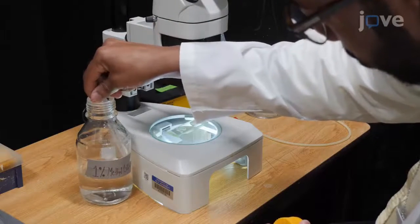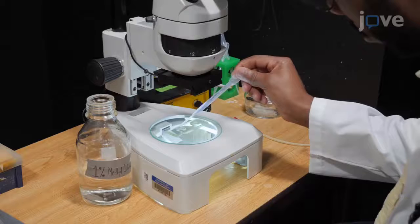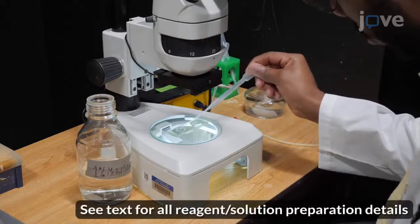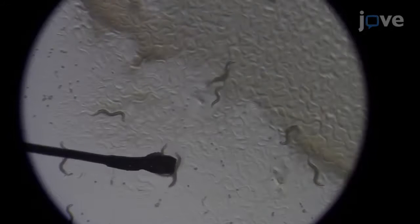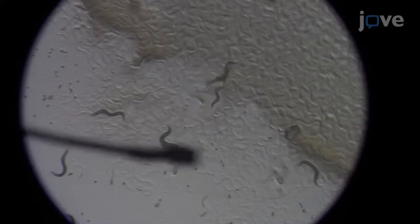Begin by adding 500 microliters of 1% methylcellulose solution into the depression of a concave microscope slide. Using a platinum wire pick, transfer adults from a nematode growth medium plate into the M9 methylcellulose solution.